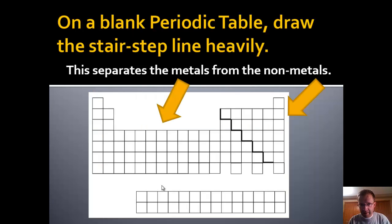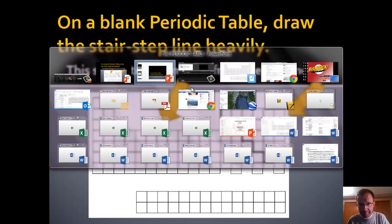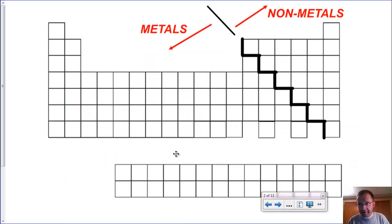The first thing I'll have you do on your blank periodic table is draw in this dark stair-step line. You've seen this on periodic tables before. Your blank one does not have this, but you want to draw it in carefully. Start up here in the corner, kind of the top left corner of the P block, and go down, across, down, across, and just make this stair-step line. This separates us on the left, the metals, and on the right, the non-metals. You want to draw in this dark line and label to the left and the right, the metals and the non-metals.